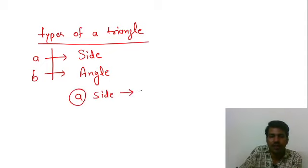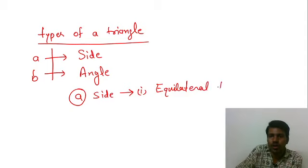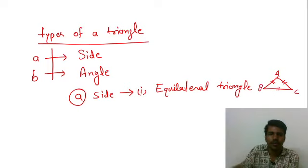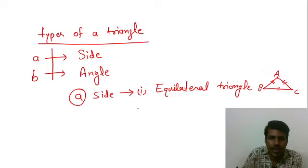We have equilateral triangle. Equilateral triangle means समबाहु त्रिभुज. एक ऐसा त्रिभुज जिसकी सभी भुजाएं बराबर होती हैं. Hope you get it.